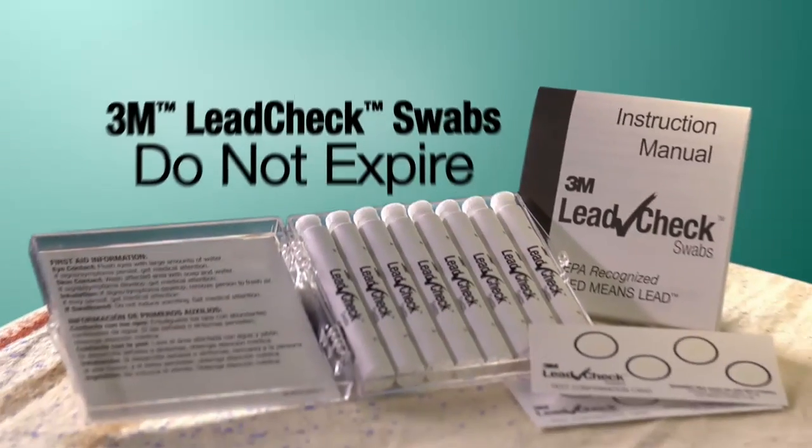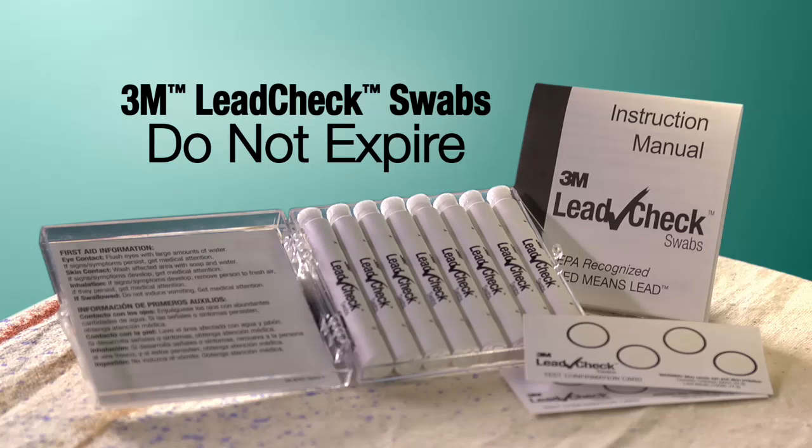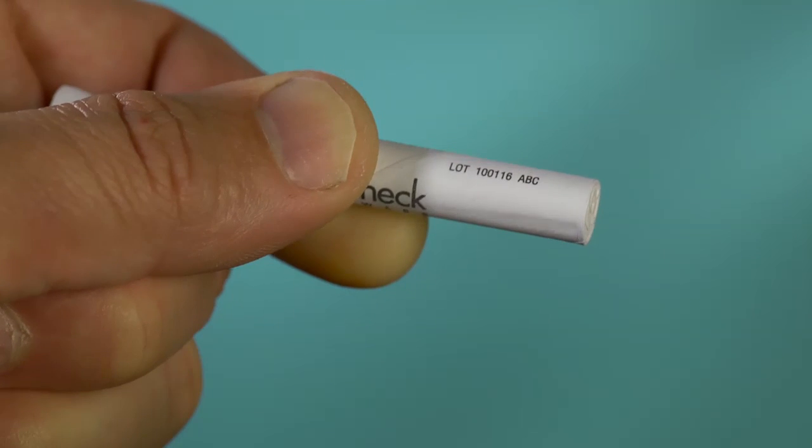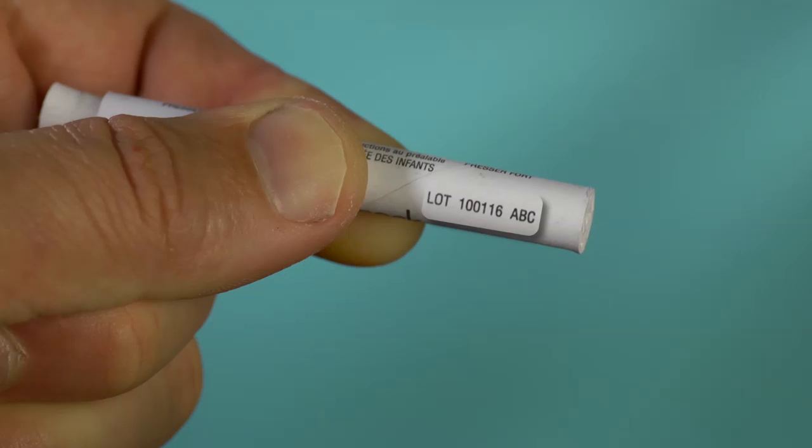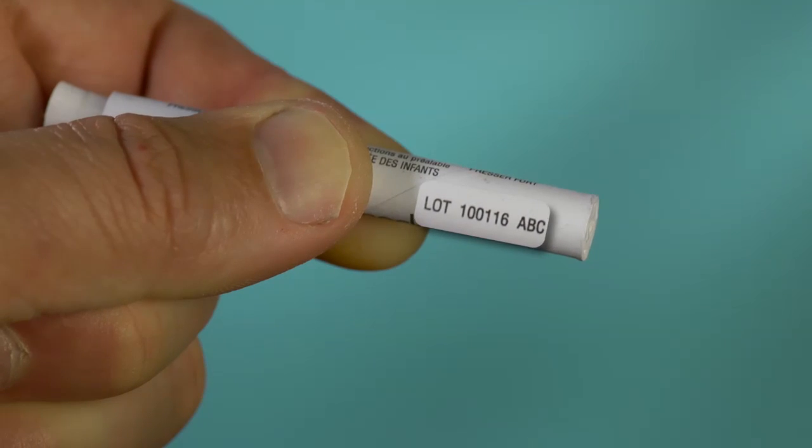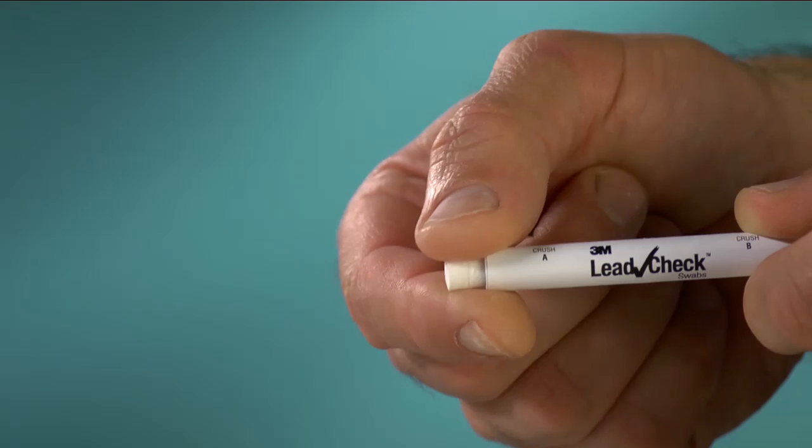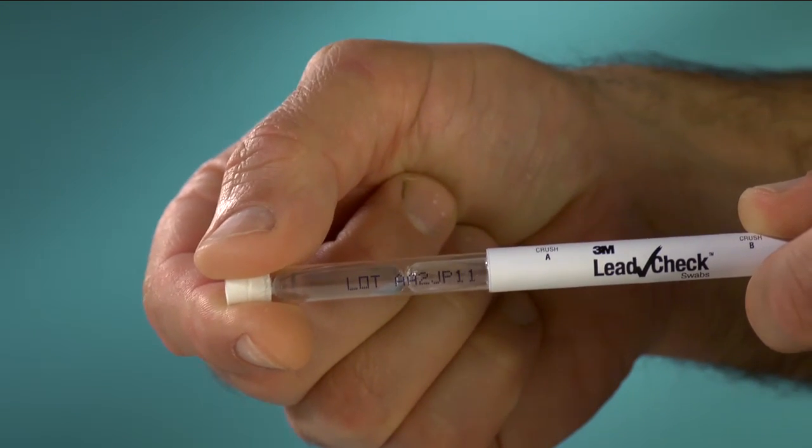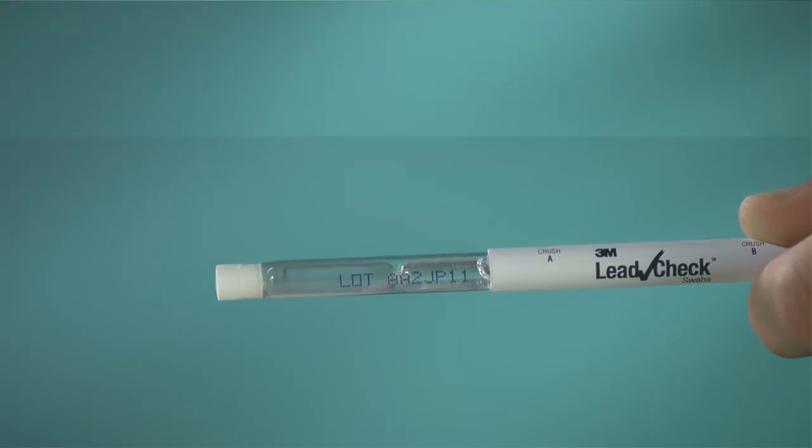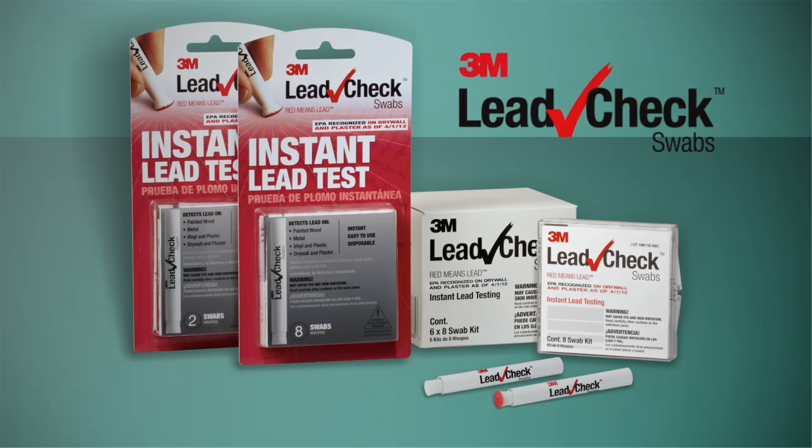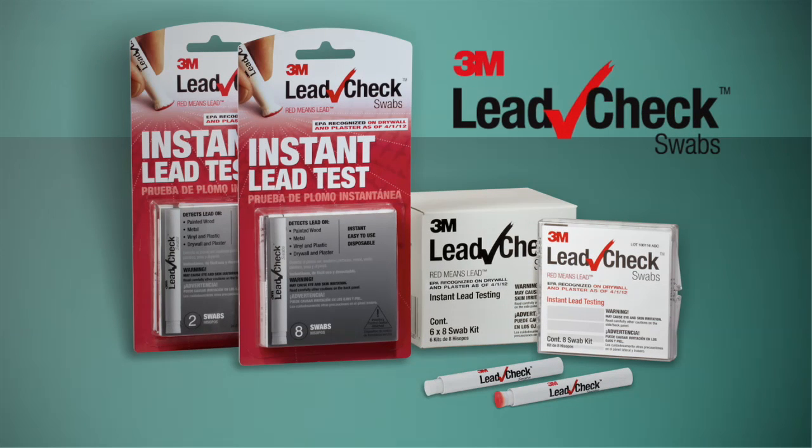3M LeadCheck swabs do not expire, so when filling out the EPA form, use the lot number shown on the swab in the expiration date field. The lot number can be found on the cardboard cover or on the plastic tube underneath the cardboard cover.